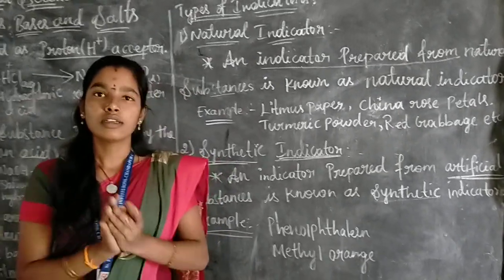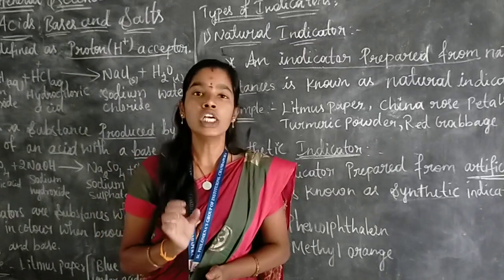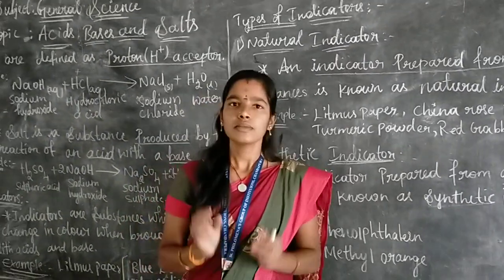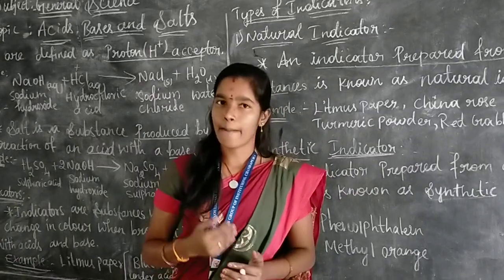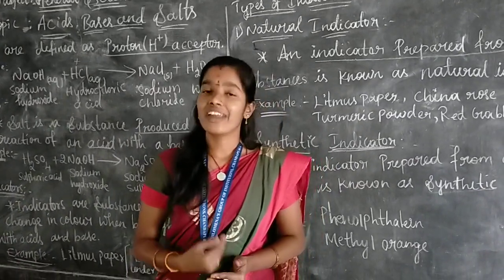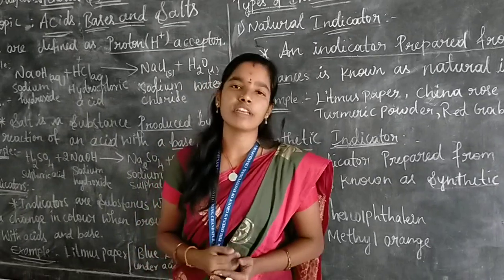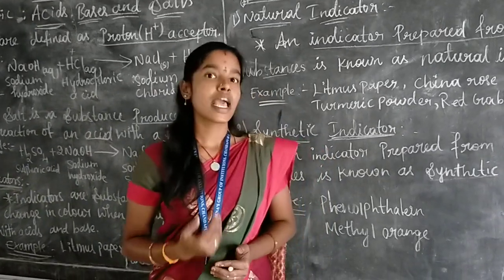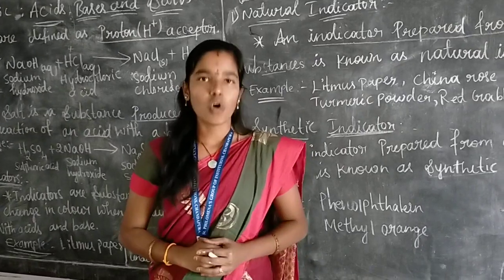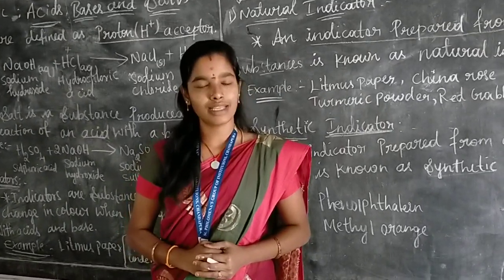Today we have discussed some terminologies which will be useful for this lesson. First, acid and base; next, salt; and then indicators. Under indicators, we discussed types of indicators: natural indicators and synthetic indicators. I hope all understood. If you have any doubt, you can ask me. Thank you.